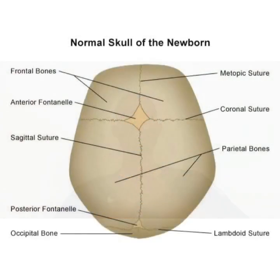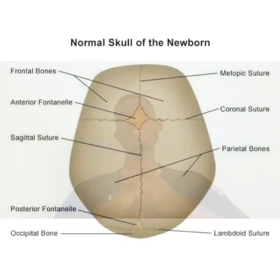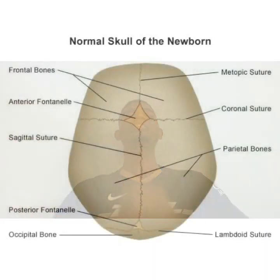There are three major sutures in the skull: we have the coronal suture, the sagittal suture, and the lambdoid suture. The coronal suture joins the frontal bone and the two parietal bones together. The sagittal suture joins the two parietal bones together. The lambdoid suture joins the occipital bone and the two parietal bones together.